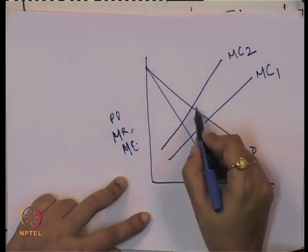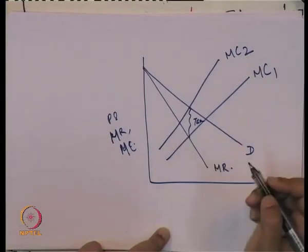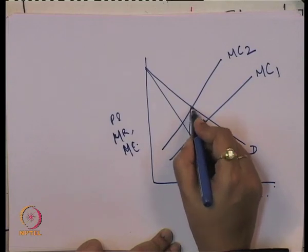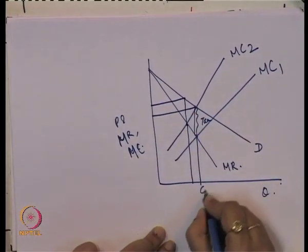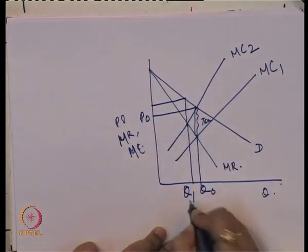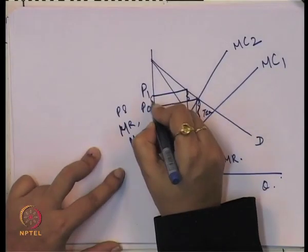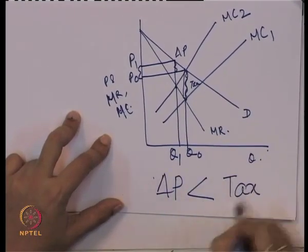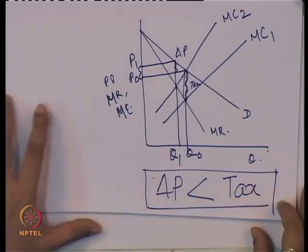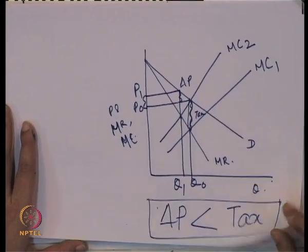The amount of tax is the vertical distance between MC1 and MC2. The change in price due to this tax: the original equilibrium gives Q0 and P0, and after the shift to MC2 we get Q1 and P1. The increase in price is less than the total amount of tax. So the change in price is less than the tax — the producer is passing only part of the tax burden to the consumer, not the entire tax burden.